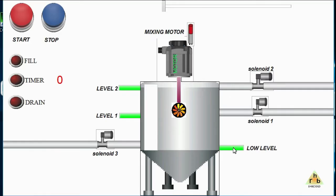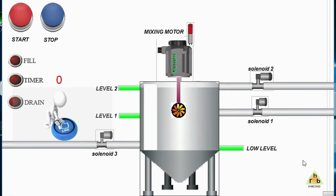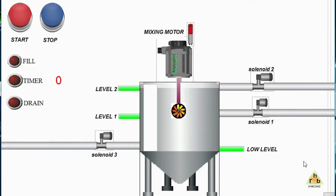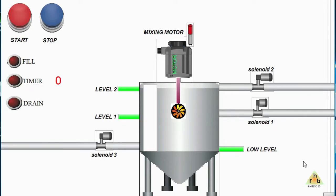These are the level sensors: Level 1 and Level 2, which detect the level of liquid inside the tank. One more low-level detector is provided to sense when all the liquid has been drained out. Now let us understand how this process works with the animation, and after that we will learn to build a ladder diagram and create the HMI screen.